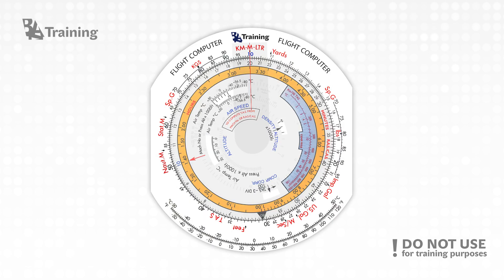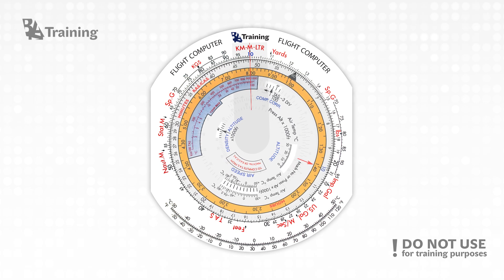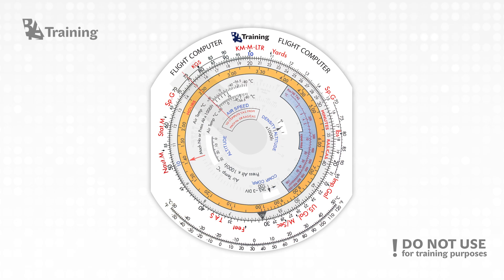In order to do this on CRP computer, we have to align the number of liters we want to convert to the liter arrow at the top of the CRP computer. Then we have to rotate the cursor to the kilogram section on the left and align the cursor with the fuel specific gravity, which we were provided by refueling services.